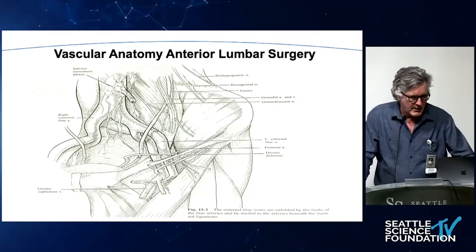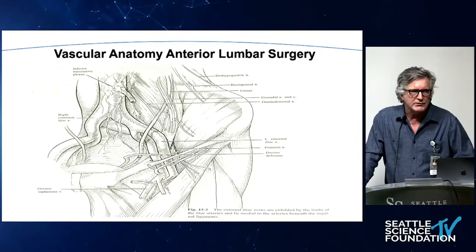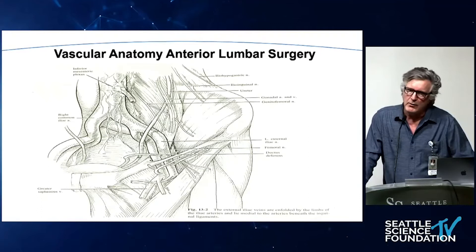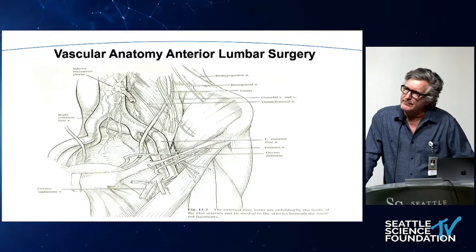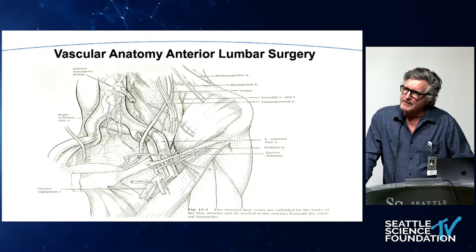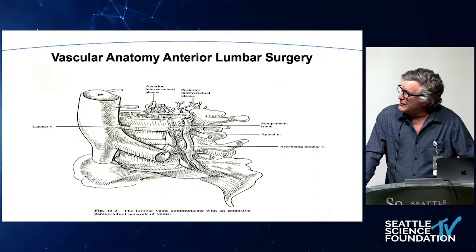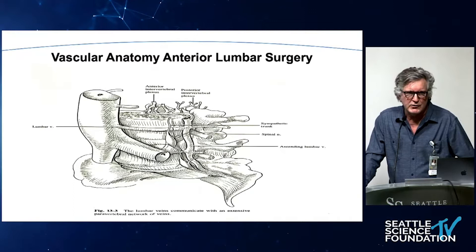The vascular anatomy we need to pay attention to — this discussion will be primarily concentrated on the lumbar sacral spine — is the bifurcation of the iliac vessels and the aorta and the IVC. The iliac vein tends to run medial and posterior to the left iliac artery. That's important when you're mobilizing the L4-5 segment, because you have to move the artery and then get access to the vein. The key in this operation is the iliolumbar vein. Once you get control of and divide the iliolumbar vein, your operation gets a lot easier.